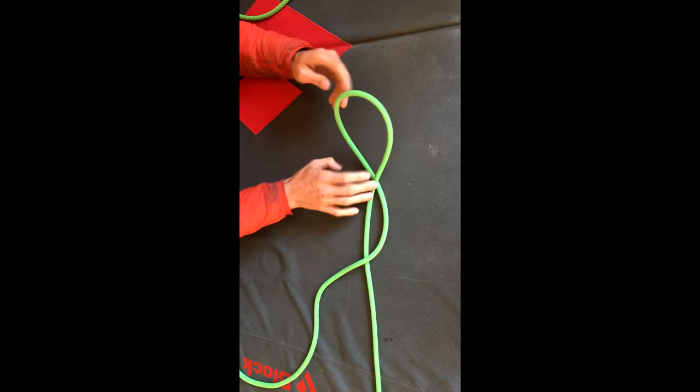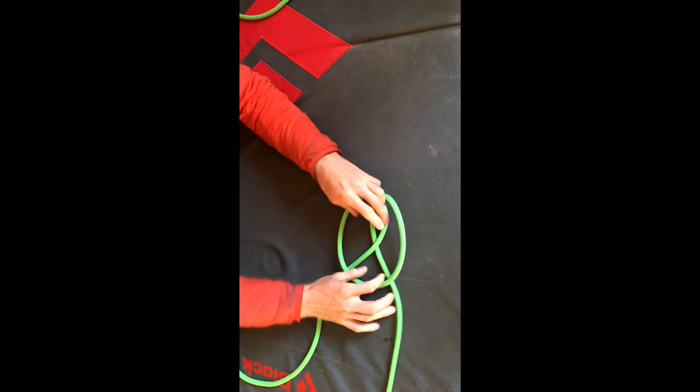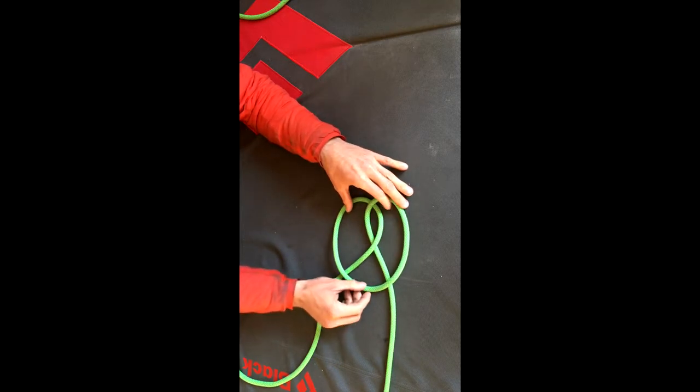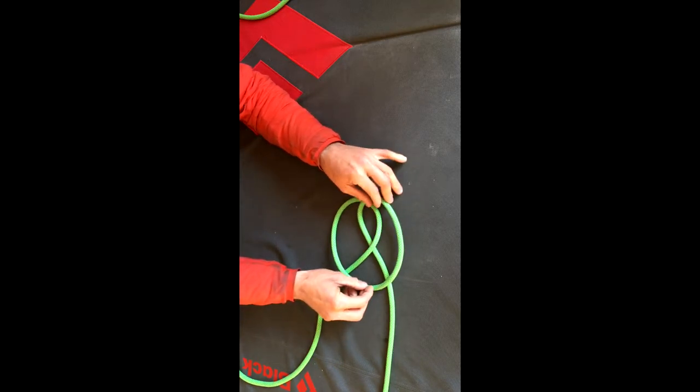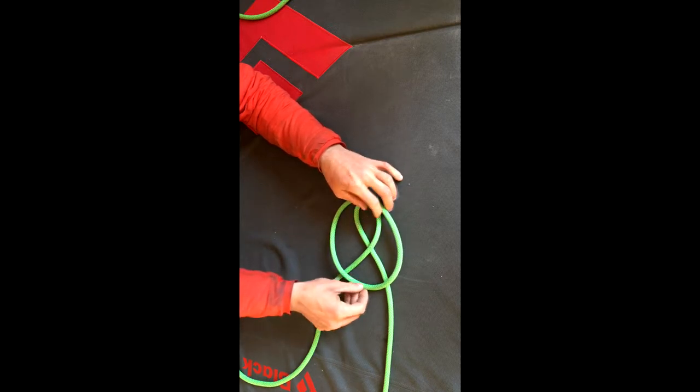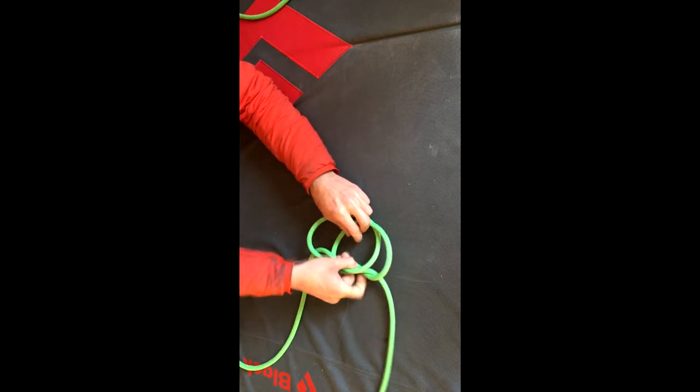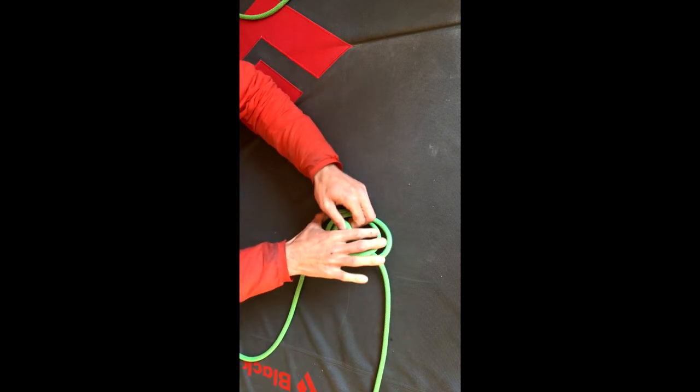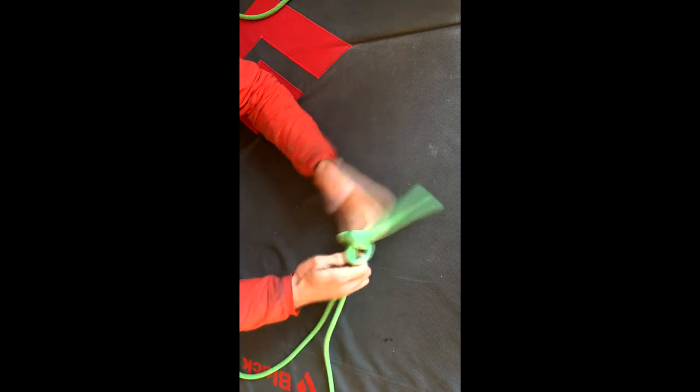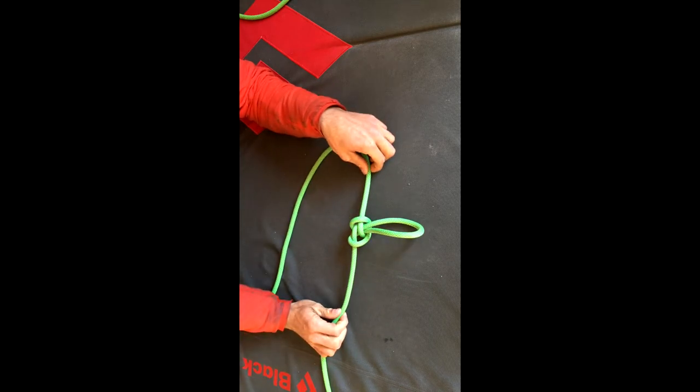The next step is we're going to take this top loop and fold it back, creating what looks like a pretzel knot. From here we're going to continue around the legs, moving this strand up through this center hole, passing it underneath the legs and up through the center hole, and go ahead and pull it tight.